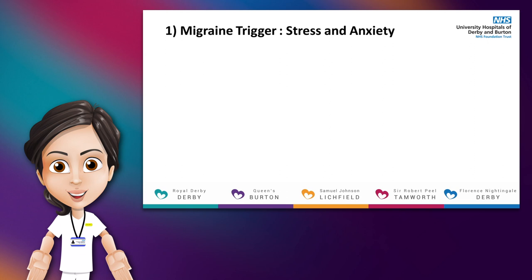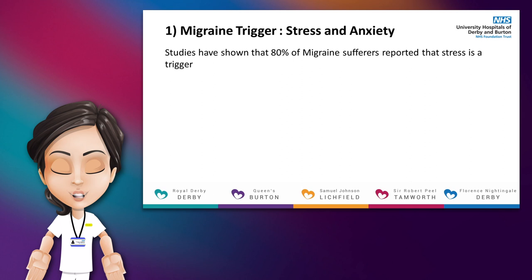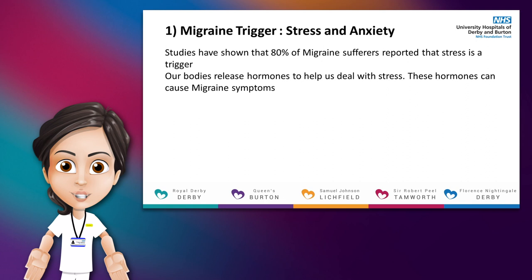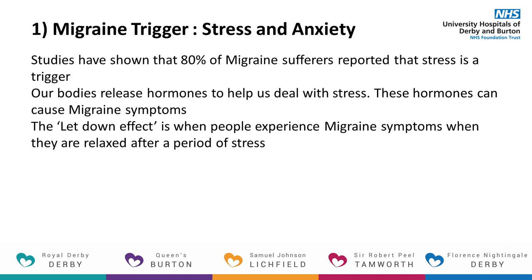One of the main triggers for migraine is stress and anxiety. Studies have shown that 80% of migraine sufferers report that stress is a trigger. Some people experience migraine episodes when they are stressed. When we feel anxious or stressed our bodies release hormones which help us deal with that stress. Unfortunately these hormones can cause migraine symptoms. Some people have their migraine symptoms when they are relaxed after a period of stress, busyness or worry. Some call this the let down effect. It has been suggested that this may be related to the stress hormones in our blood reducing.